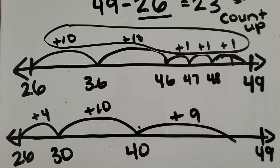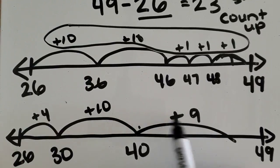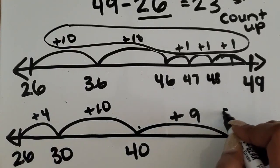I know the jumps don't look accurate, but overall, we want the students to see the amounts that will get them to their final number. 4 plus 10 plus 9. I know 10 plus 9 is 19 plus 4 more is 23.